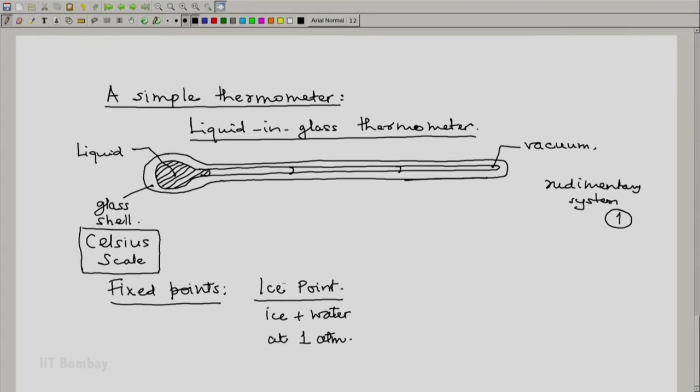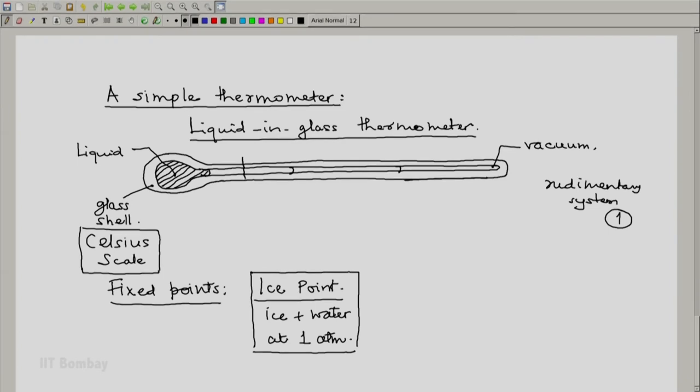And what we do is we bring our thermometer in contact with such a system, wait till thermal equilibrium is reached, and then we mark on this the location of the liquid length at ice point. This is the T ice point.